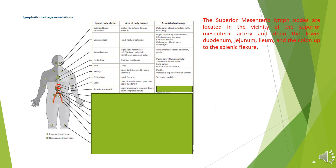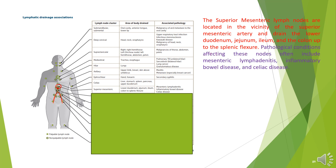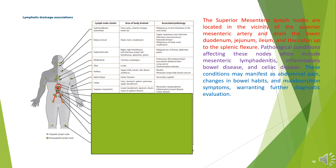The superior mesenteric lymph nodes are located in the vicinity of the superior mesenteric artery and drain the lower duodenum, jejunum, ileum, and the colon up to the splenic flexure. Pathological conditions affecting these nodes often include mesenteric lymphadenitis, inflammatory bowel disease, and celiac disease, manifesting as abdominal pain, changes in bowel habits, and malabsorption symptoms.